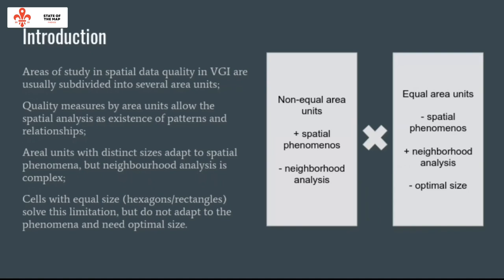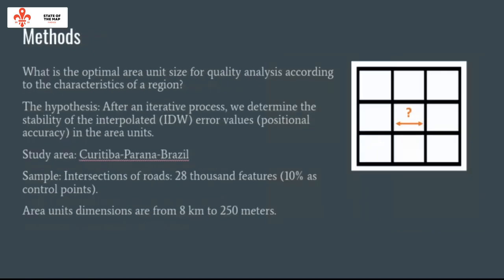Area units with distinct sizes adapt to spatial phenomena, but their analysis is complex. Cells with equal size — such as hexagonal or rectangular grids — solve this limitation, but do not adapt to the phenomena and need an optimal size. The central question of this work is: what is the optimal area unit size for quality analysis according to the characteristics of a region? The hypothesis is that after an iterative process, we can determine the stability of interpolated error values in the area units.